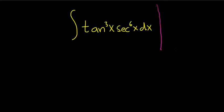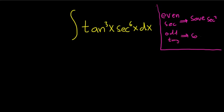Whenever you have powers of tangent and secant, there's a very useful rule to memorize. If you have an even power of secant, you want to save a copy of secant squared. If you have an odd power of tangent, you want to save a copy of secant tangent.